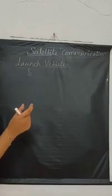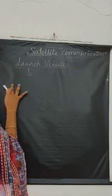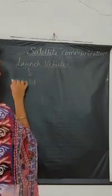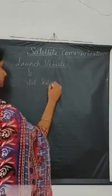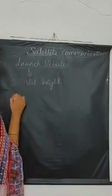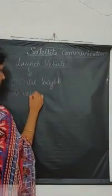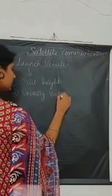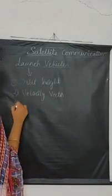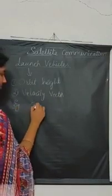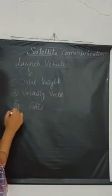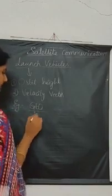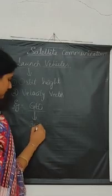There are two parameters that combine to define the orbit: orbit height and velocity vector. These two parameters together determine the satellite's orbit placement. For example, a Geostationary Earth Orbit (GEO) satellite is launched to 36,000 km.